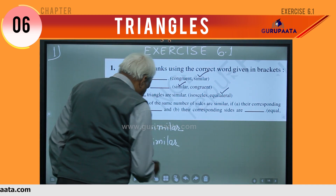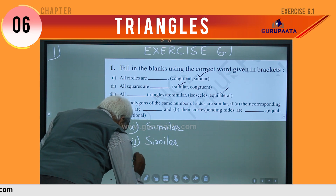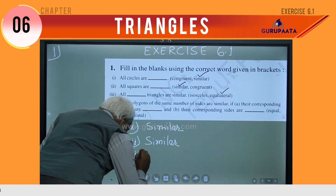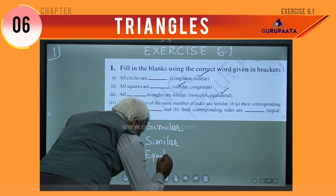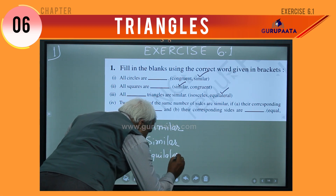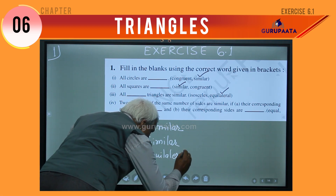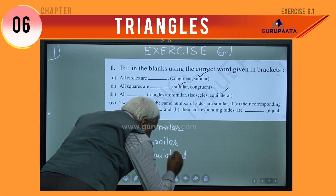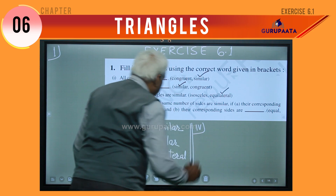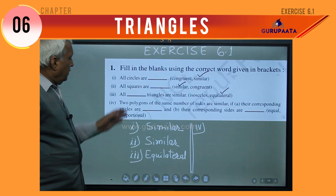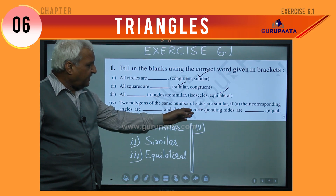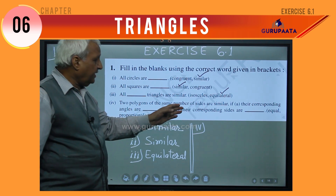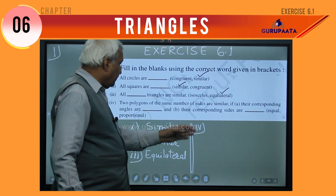I will write here number 1 — that is 'similar' — and I will also tick the correct word. Second question: all squares are similar or congruent? The correct answer is also similar.